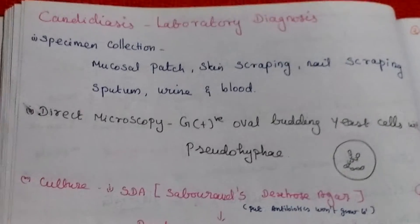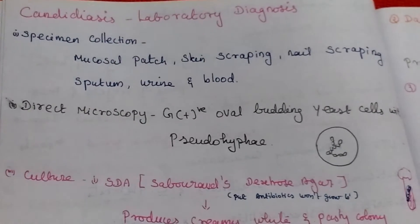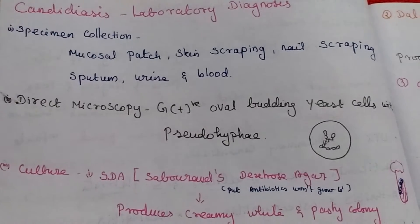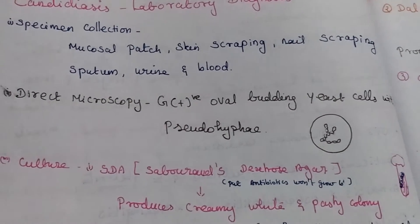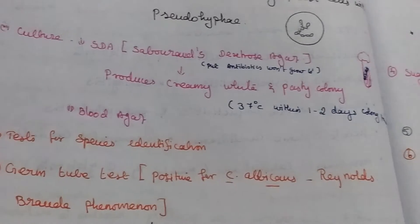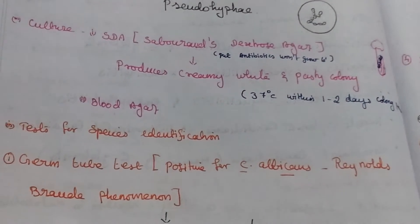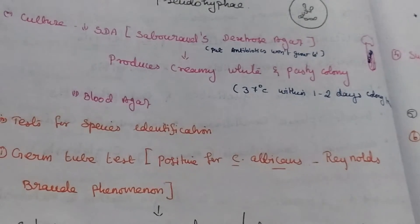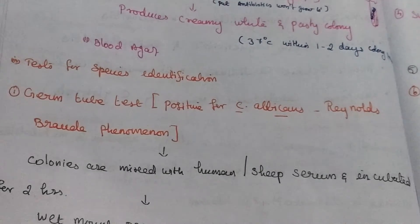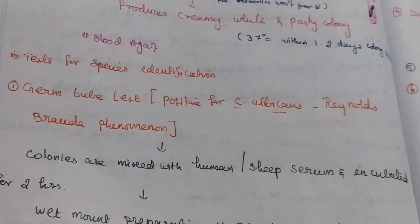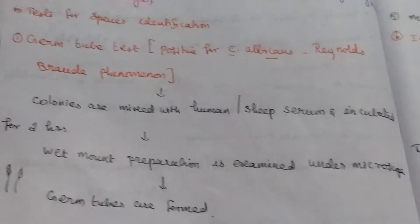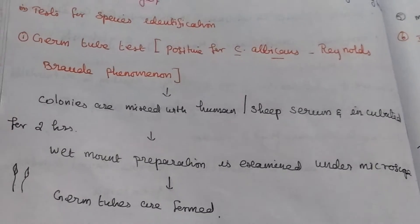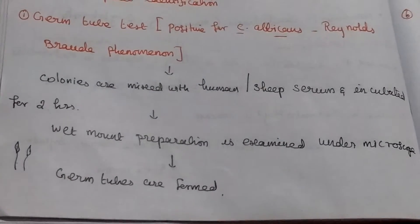In the laboratory diagnosis of Candida albicans, specimen collection is based on the site of infection. Direct microscopy shows gram-positive oval budding yeast cells. Culturing on SDA produces creamy white or pasty colonies. The germ tube method — positive for Candida albicans — involves mixing colonies with human or sheep serum, incubating for 2 hours, and examining a wet mount preparation under microscopy to observe germ tube formation.